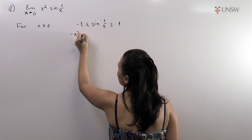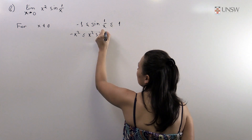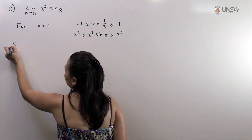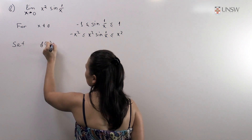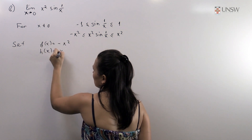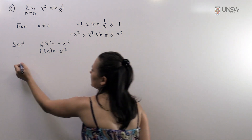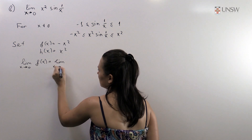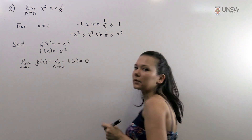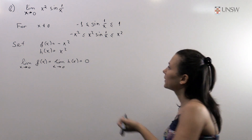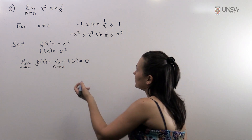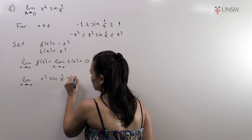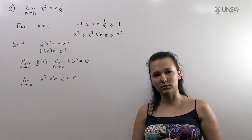So we have minus x squared less than or equal to x squared sine 1 over x and less than or equal to x squared. As in the previous part, we set f of x equal to minus x squared and h of x equal to x squared. The limit when x goes to 0 of both f of x and h of x is just 0, since both are continuous functions. Therefore by the pinching theorem the limit when x goes to 0 of x squared sine 1 over x is also equal to 0, which is the correct solution.